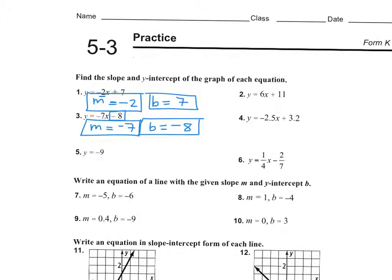The last one I'm going to do with you is number five. It's y equals negative nine. Now think y equals mx plus b. Where's your x? It doesn't exist, right? That means we did what with it? Any ideas — do you know where it went?